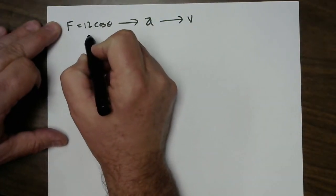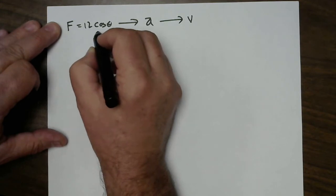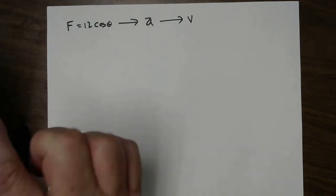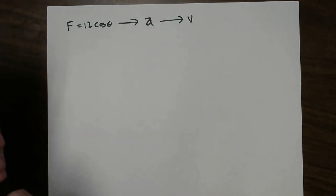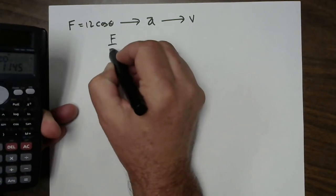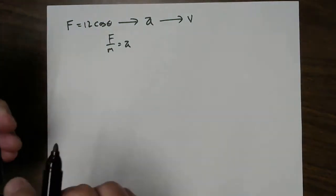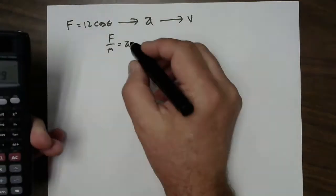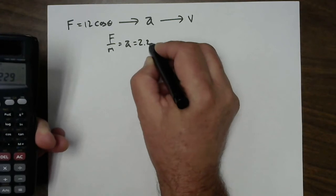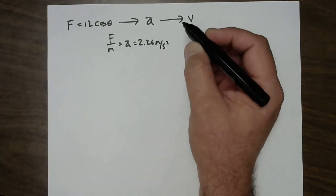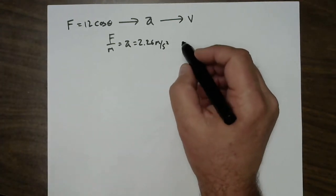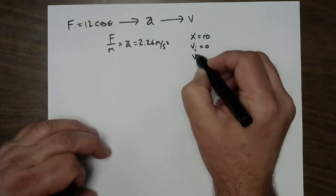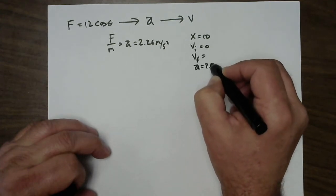So, the force exerted was 12 cosine theta, and if we take the 12 cosine theta and divide by the 5, 12 cosine 20, force divided by mass equals acceleration. Then, we divide by 5. So, we're going to have an acceleration of 2.26 meters per second squared. Now, we know that we have a position of 10 at the end of this thing, maybe a starting velocity of 0. We want the final velocity. We have an acceleration of 2.26.